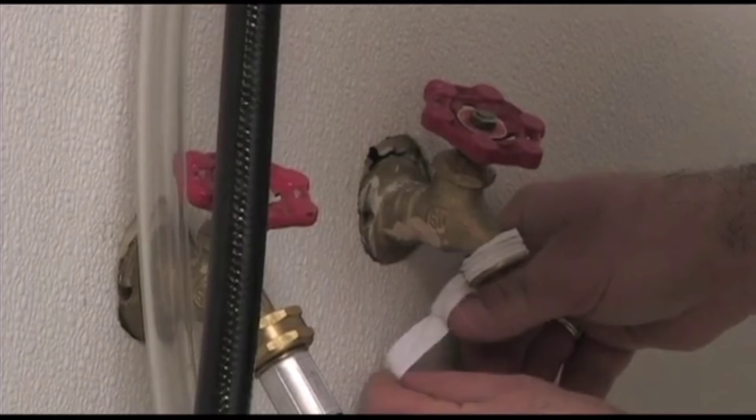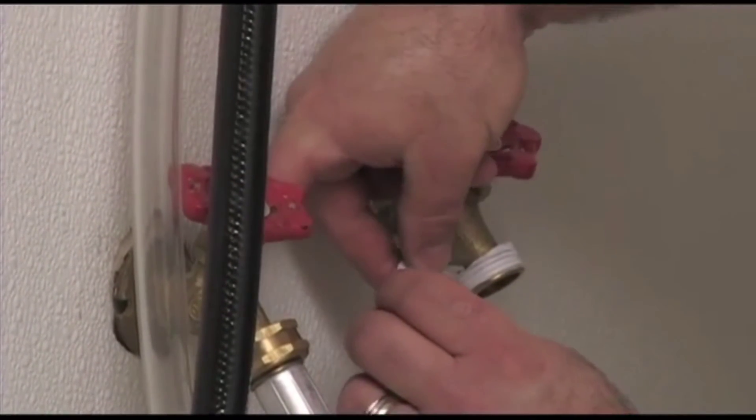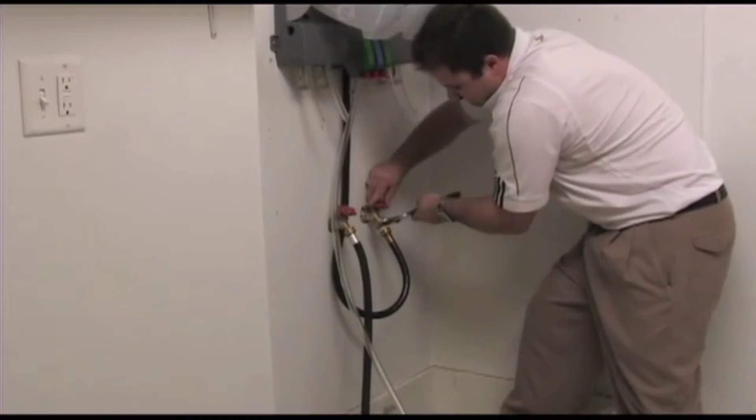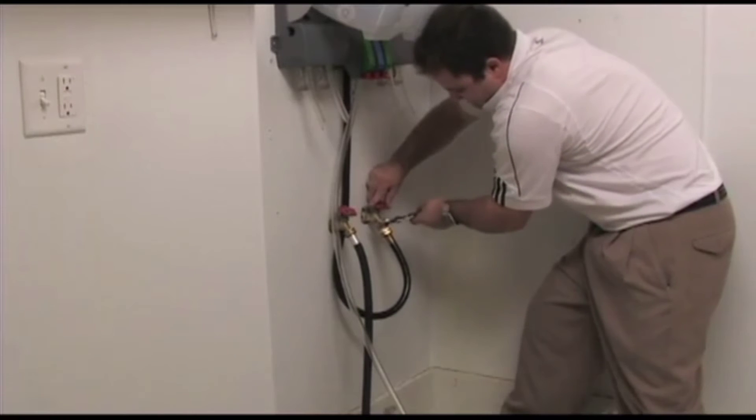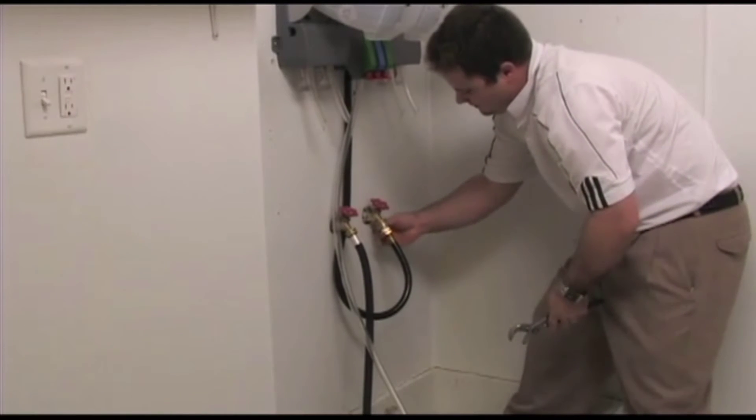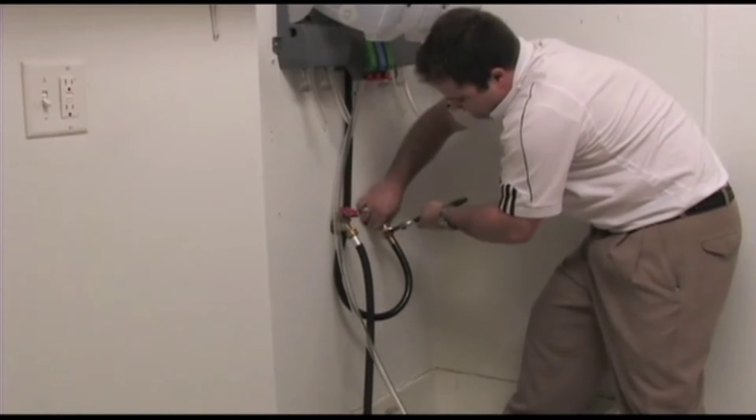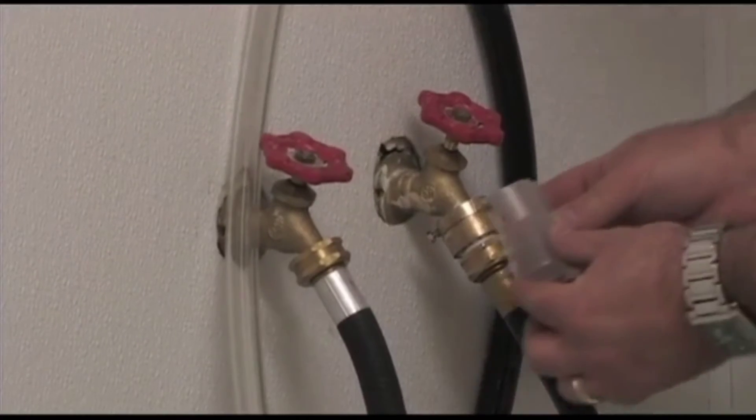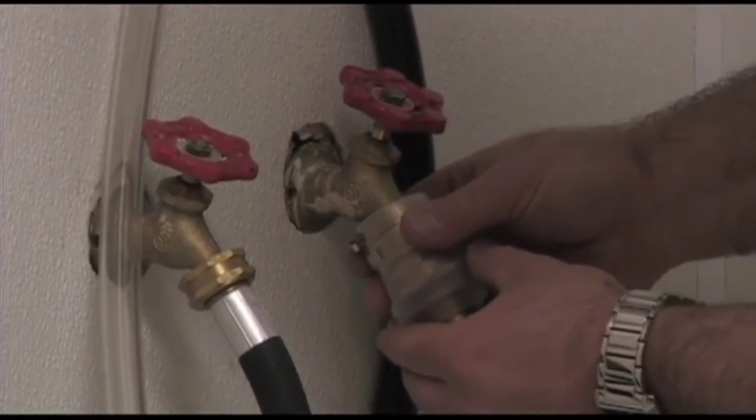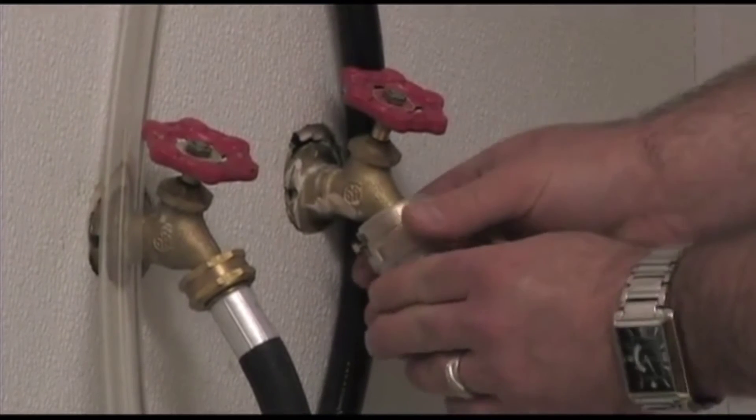Apply Teflon plumber's tape to the water source. Connect the water supply line to the water source. A vacuum breaker backflow preventer is attached to the water supply hose. Snap the plastic shroud found in the parts bag around the vacuum breaker backflow preventer.